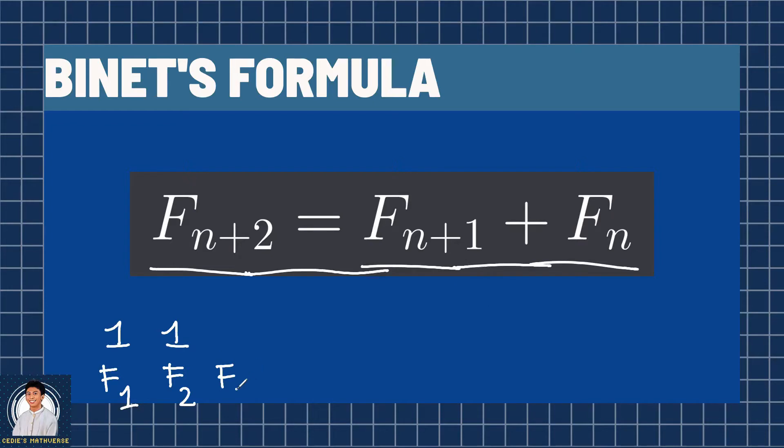We get that F sub 3 is equal to F sub 2 plus F sub 1, which is 1 plus 1 equals 2. Then F sub 4: 1 plus 2 equals 3. F sub 5: 2 plus 3 equals 5. F sub 6: 3 plus 5 equals 8. F sub 7: 5 plus 8 equals 13, and so on.